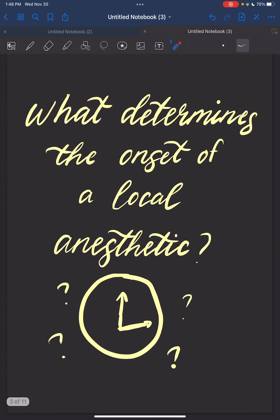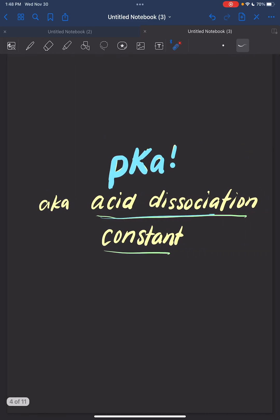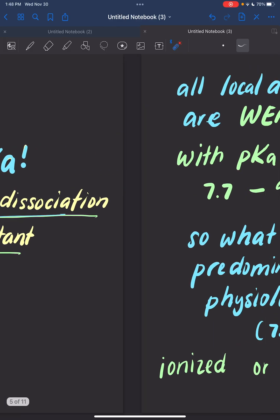What determines the onset of a local anesthetic? You got it, pKa, or the acid dissociation constant. This concept was from our first week of CRNA school and it's coming back. pKa is really important because the pKa of a drug is going to determine how fast it's going to take effect.